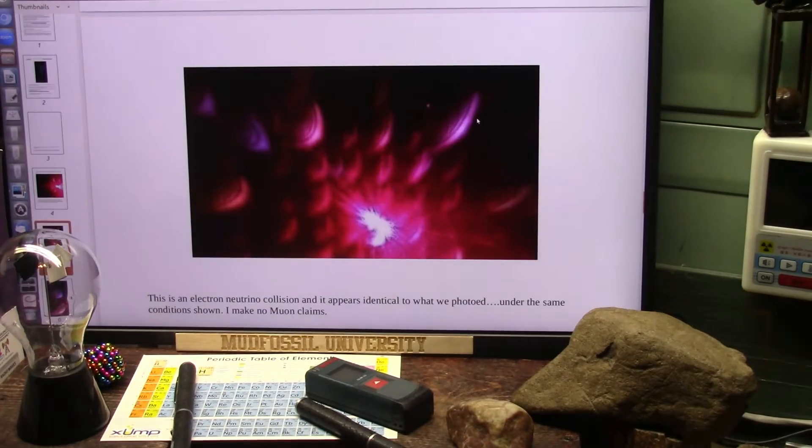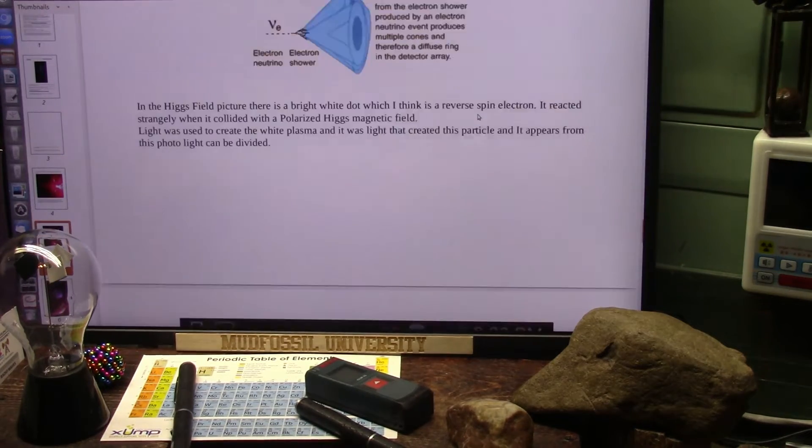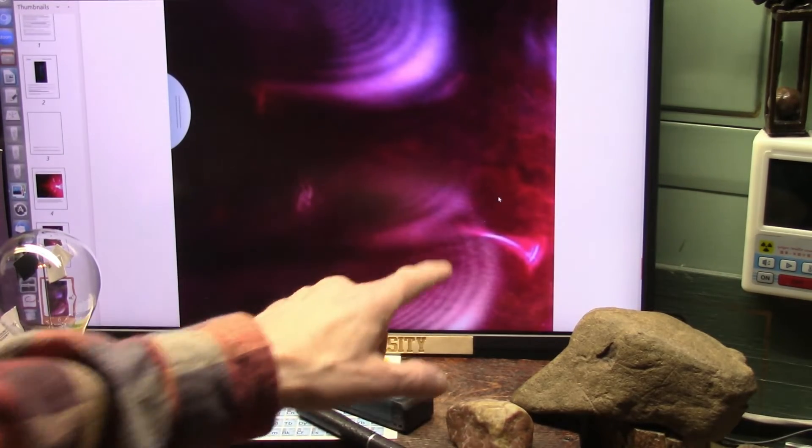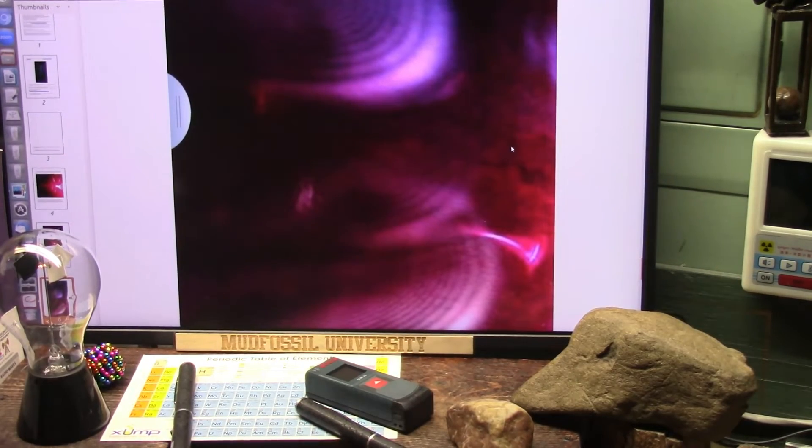It's fairly well documented what I'm showing. And this is the killer right here. Have somebody explain that to me. I know what happened here, I do understand what happened. This particle should have been like this. How did that happen?